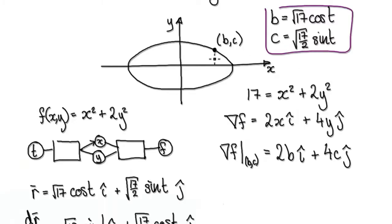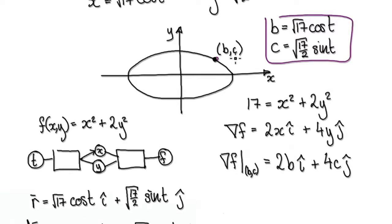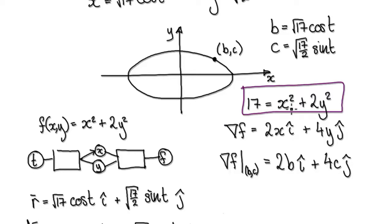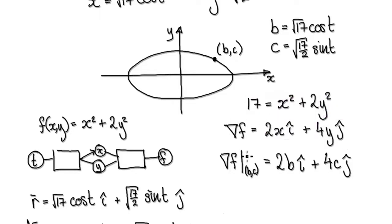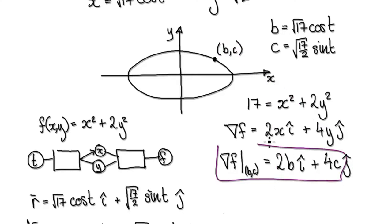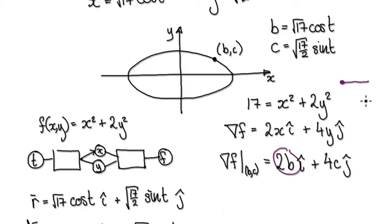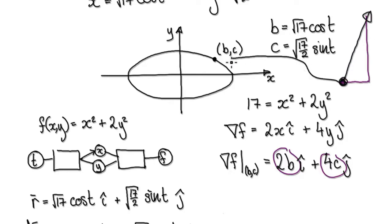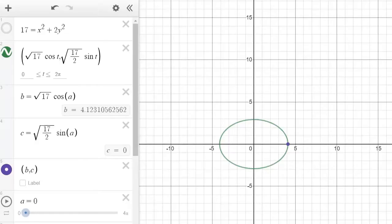Now we need to work out our gradient vector. To compute it, start with our ellipse equation and partially differentiate with respect to x and y. Evaluate at our given point (B, C) — put B and C into the partial derivatives. Our gradient vector is given by this: move 2B across and 4C up.